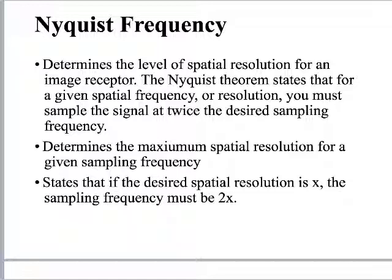The Nyquist frequency theorem states that to accurately detect something, you need twice the signal of what you're trying to detect — twice the number of pixels of what you're trying to see. Think of it like asking someone to repeat themselves on a noisy, windy day. Two times the number of pixels is the best way to reduce noise while improving spatial resolution. Exposure latitude is how broad a range — from overexposure to underexposure — you can still get a good picture. The exposure latitude of digital imaging systems is thousands of times greater than that of film.